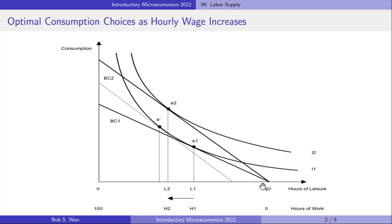Amy's optimal choice moves from E1 to E2. This total effect can be decomposed into the substitution effect and the income effect.